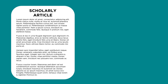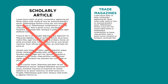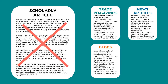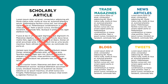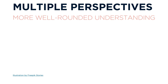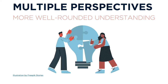However, because these individuals don't meet the scholar criteria, they don't write scholarly articles but share their information through other sources such as trade magazines, news articles, blogs, tweets, etc. Finding and using multiple perspectives from varied information sources will give you a more well-rounded and representative understanding of a topic or issue than if you just use one perspective or source.